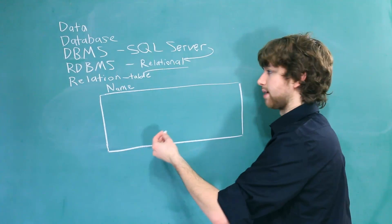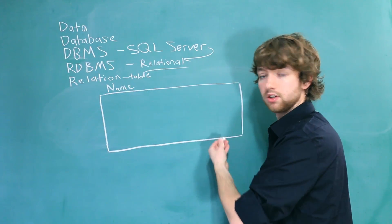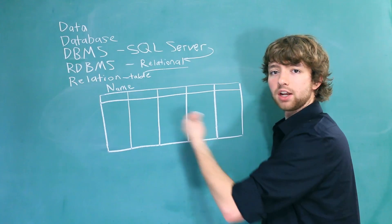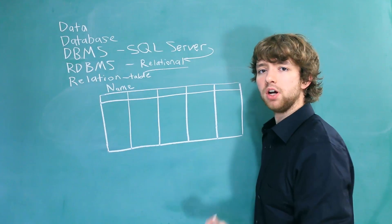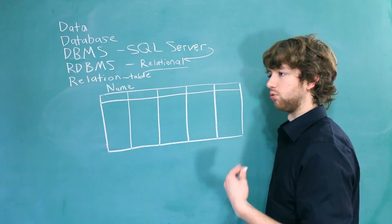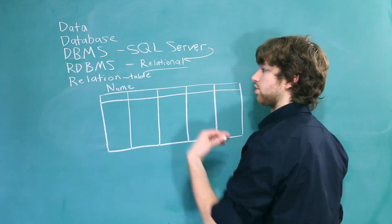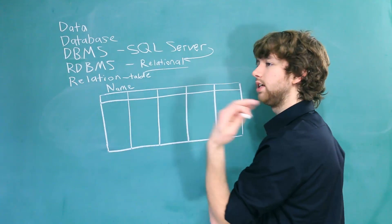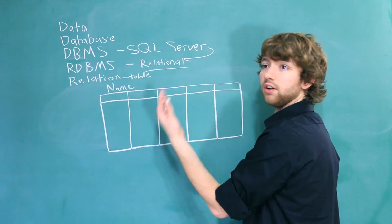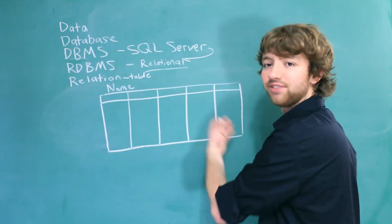And inside of the table, there's going to be columns. So each column is going to have a header of what that column is called. So it really depends on what the table is about. But you could have a table to store recent orders, for example. So the name of the table might be orders, and the columns might be like order ID, date ordered, who ordered it, stuff like that.